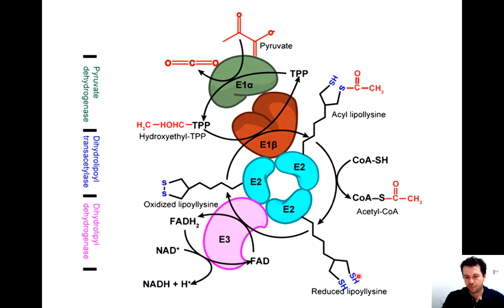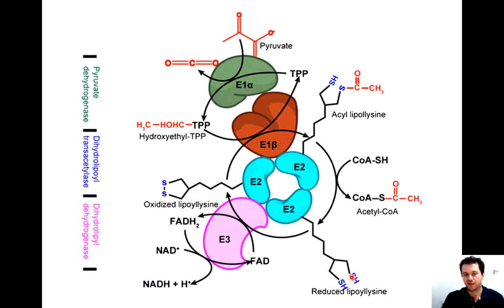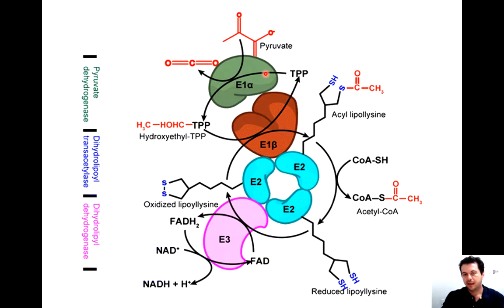When you have SH or SS in the proteins, it means these proteins are probably redox regulated. SH means the protein is reduced and SS means the protein is oxidized. Here you have oxidized proteins and here you have SH — reduced. You have SS, and then thioredoxin comes and cleaves this bond, so the S becomes SH, which is reduced and not oxidized. Each subunit can be regulated by different mechanisms — one subunit can be phosphorylated, another can be redox regulated, acetylated, and so on.